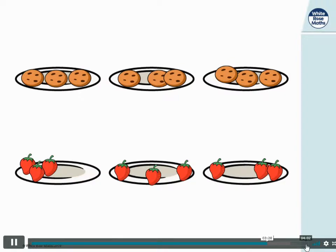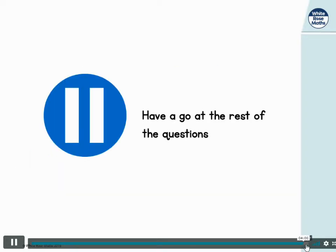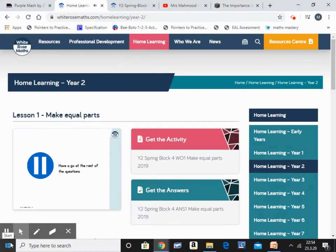Strawberries, strawberries, strawberries, all these strawberries! I love strawberries. These groups look very equal though, but hang on a minute, when I check the first plate has got one, two, three strawberries, the middle plate has got one, two, three strawberries, and the right hand plate has got one, two, three strawberries. Three groups with three strawberries in each, three equal groups. Pause here and have a go at the rest of the questions.